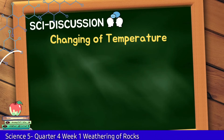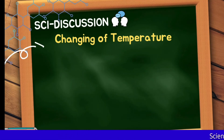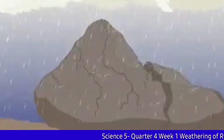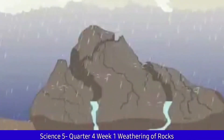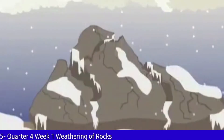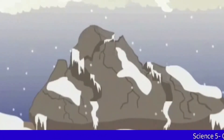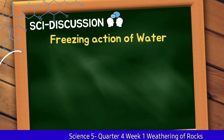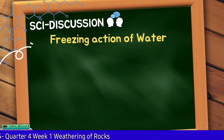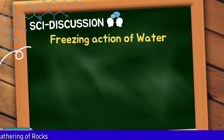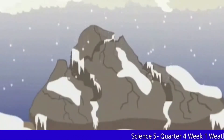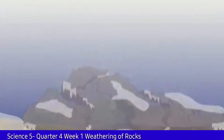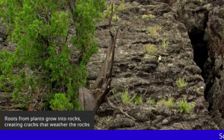When rocks are exposed to varying temperature, they expand. If rocks are exposed to a low temperature, they contract. The repeated expansion and contraction due to changes of temperature results in weathering. Roots of growing plants also disintegrate rocks.